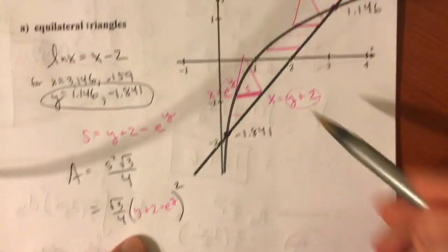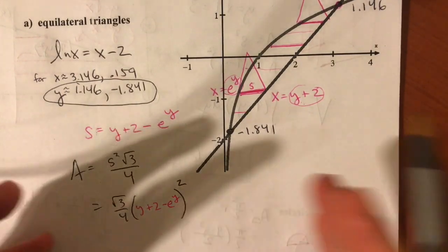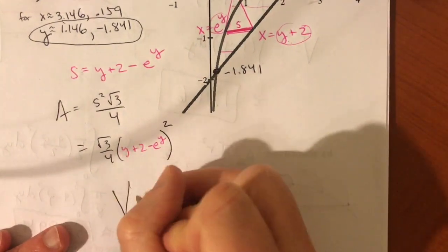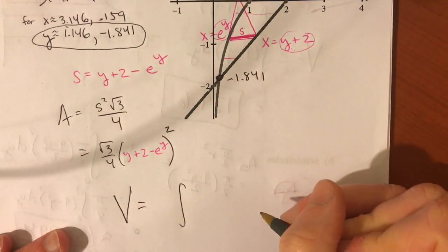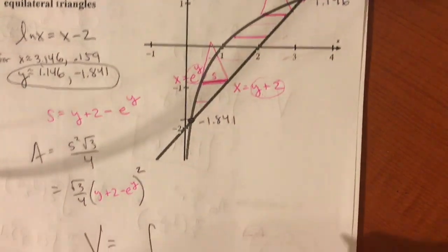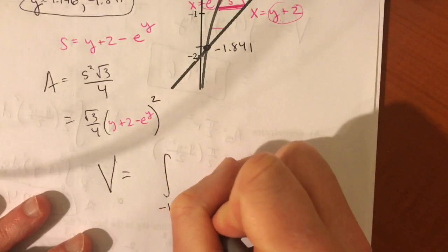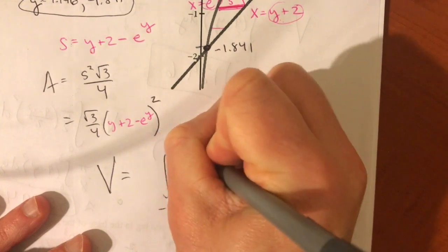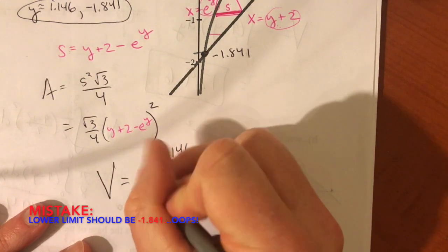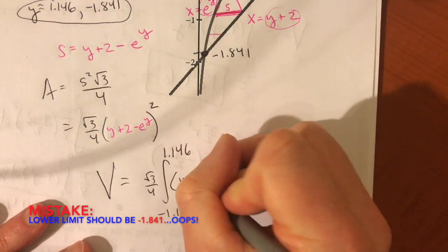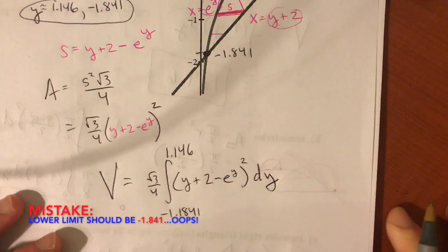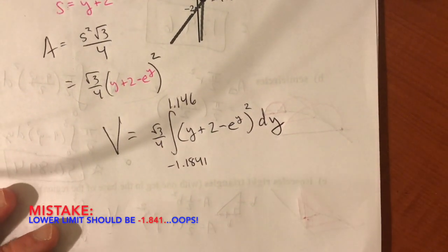And if that's the area of each one of these triangles, we integrate to get all of them. That infinite amount of sections added up give us that volume. So the volume will be the definite integral from this y value to this y value. So from negative 1.841 to 1.146. And this is our area. So you can factor the root 3 over 4 out in front or you can keep it inside. y plus 2 minus e to the y squared dy. Got to have that differential on the end. What is this? Honor's calc if you don't have that? No way. It's AP.